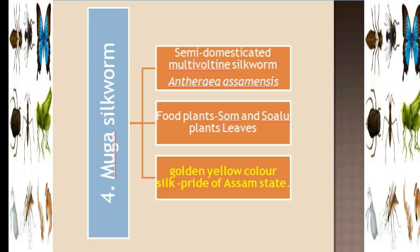The next important silkworm species is the Muga Silkworm. Its scientific name is Antheraea assamensis. It is mainly found in the Assam region and is considered the pride of Assam.